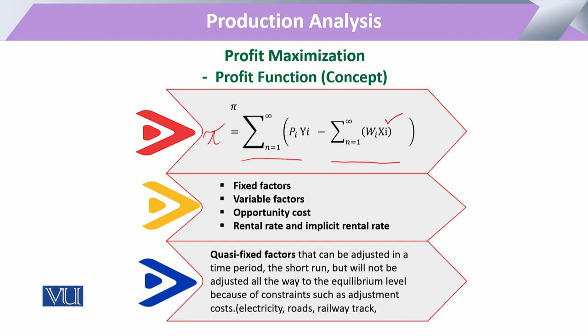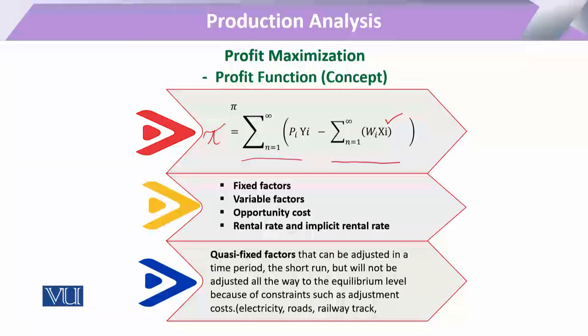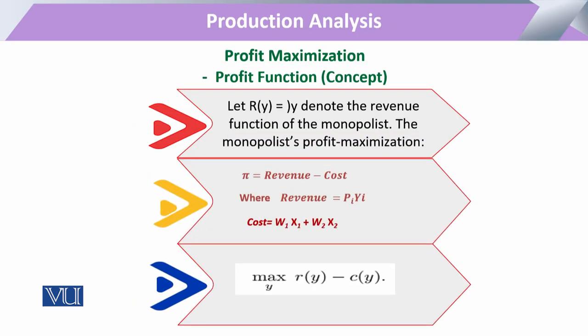Another concept that emerges here is quasi-fixed factors — factors whose costs cannot be fully expressed within a single day of the system. These are costs that can be adjusted over time. In the context of labor, this includes costs of training or hiring. For capital, examples include costs for electricity infrastructure, road construction, or railway tracks needed to make a system functional. Once utilized, these costs are recovered across the flow of production.